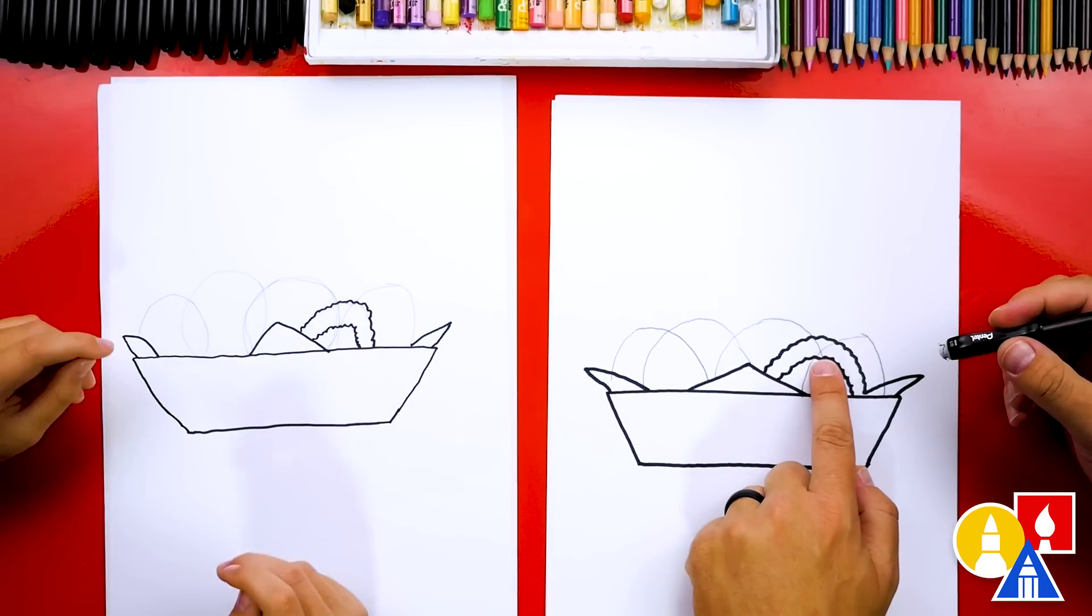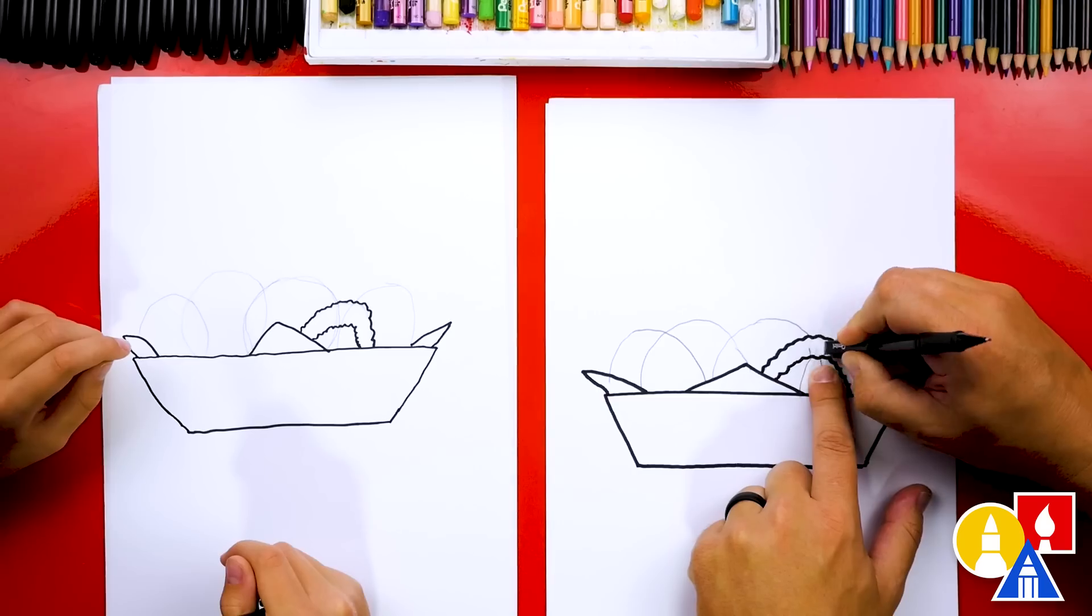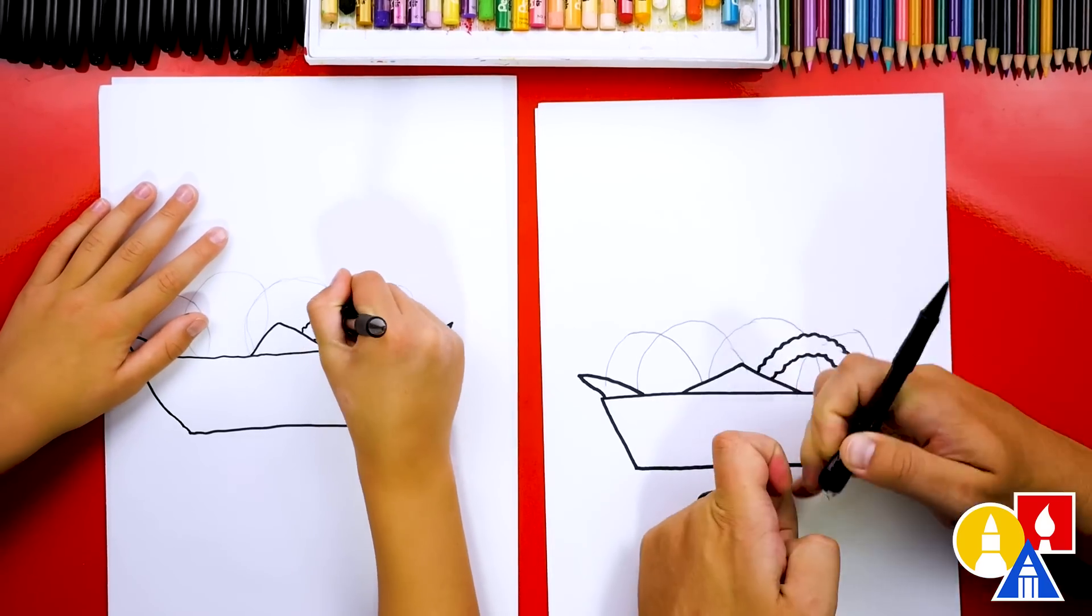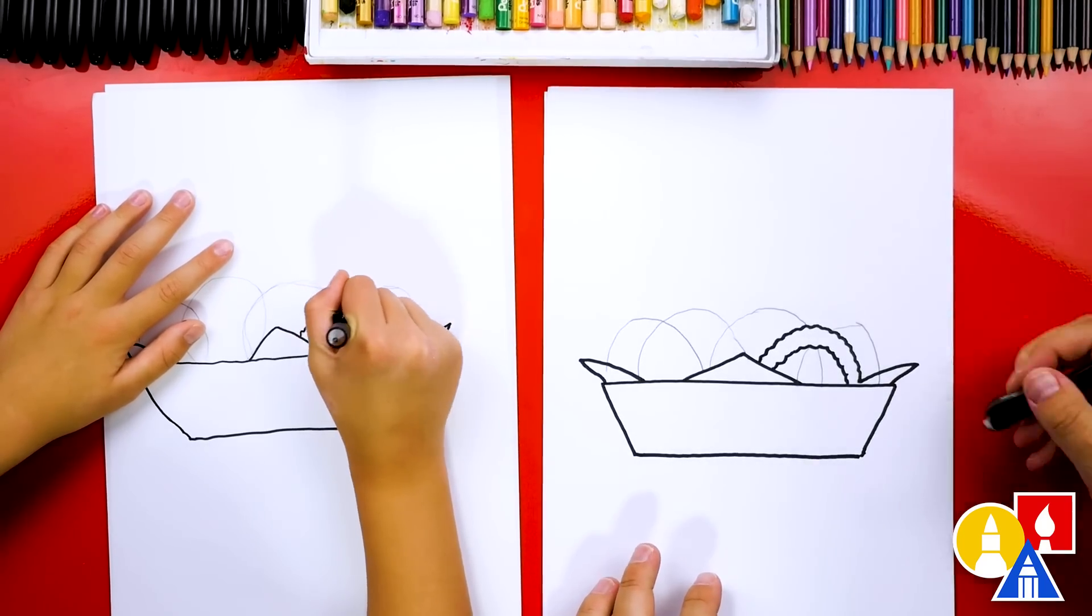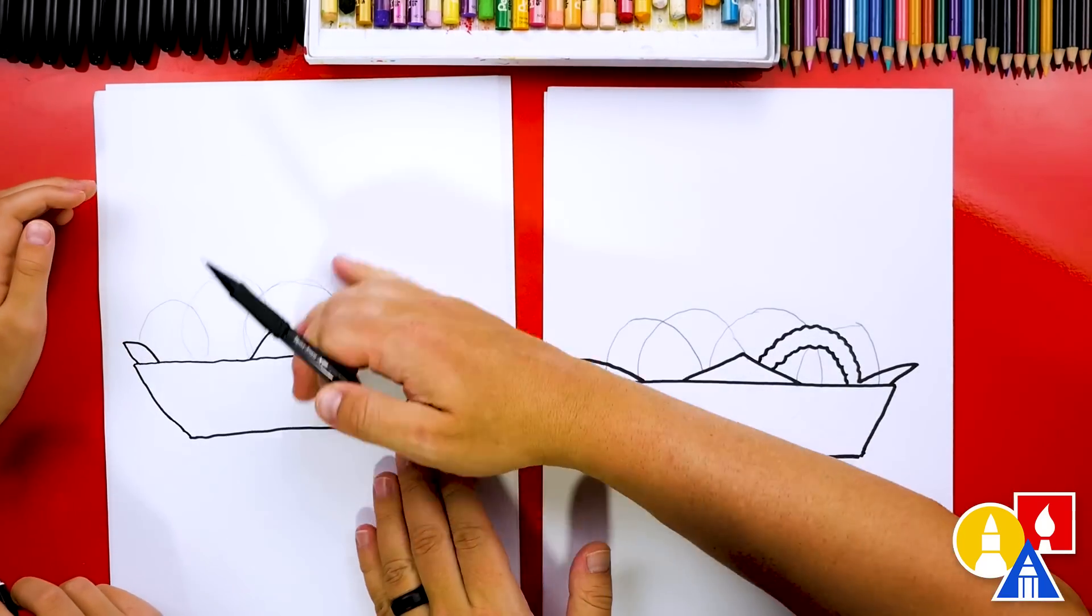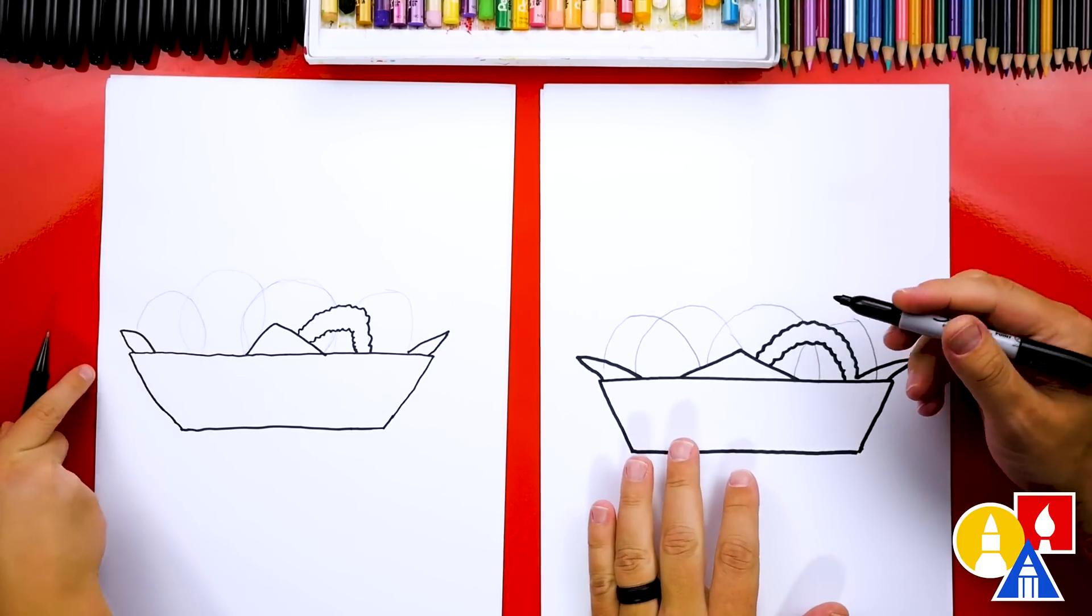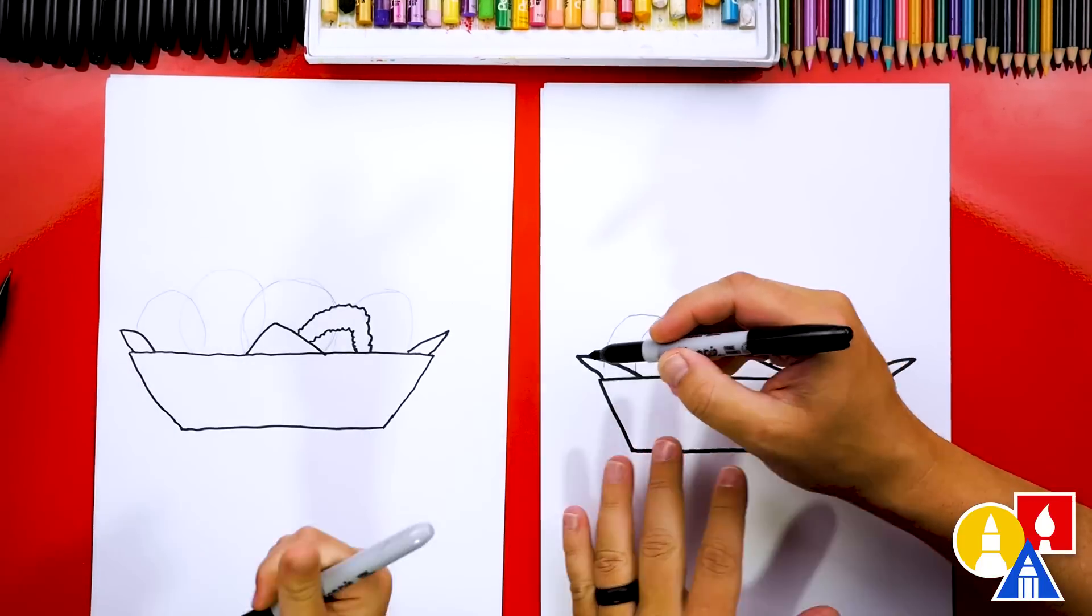Also, you want to erase any of the guidelines inside of that first onion ring that we drew so that we don't get confused and accidentally draw on in front of that onion ring. Now, let's switch to our marker again. I'm going to jump over here and draw this one. So maybe you could do this one too.